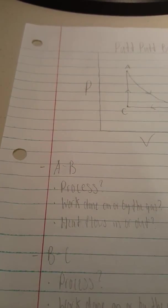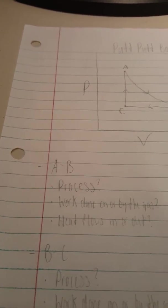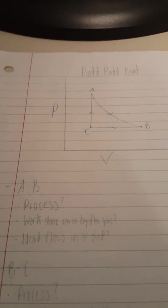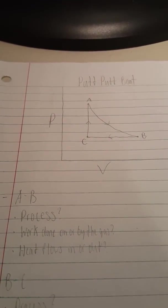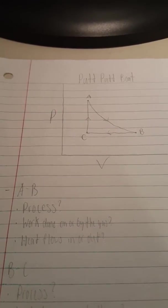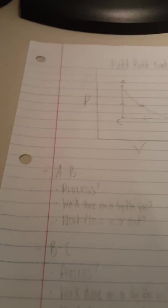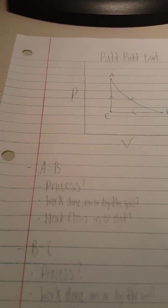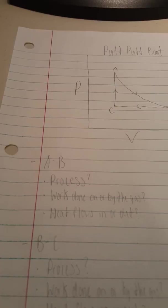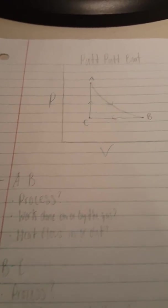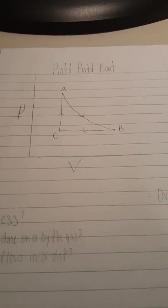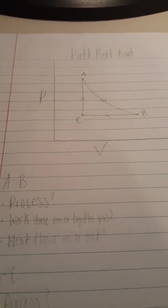First, we're going to look at process A to B. We want to know what is the process, is work being done on or by the gas, and does heat flow in or out. A to B is a curved line that travels down from A to B, and the only process we know that does that is an isothermal process, which is where temperature stays the same. We can answer the work question by looking at the volume — the volume is increasing, so work is being done by the gas because volume increases.